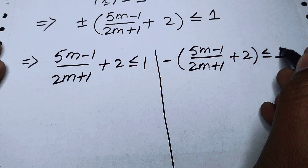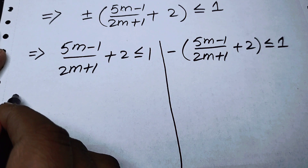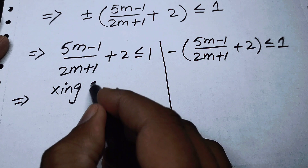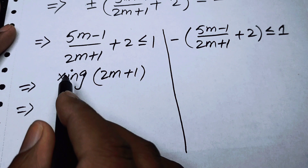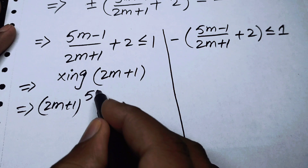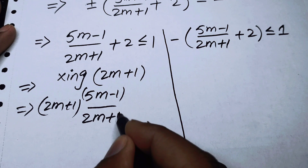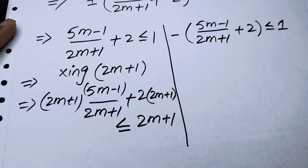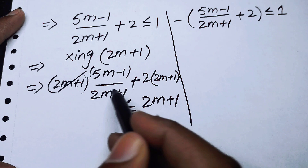For Case 1, we take the LCM — in other words, we multiply both sides by (2m + 1). This gives (2m + 1)·(5m − 1)/(2m + 1) + 2(2m + 1) ≤ (2m + 1). The (2m + 1) cancels on the left.